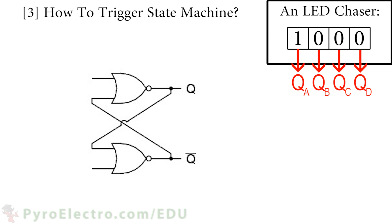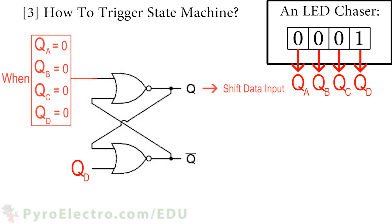To trigger the state machine, we can use the fourth bit of the shift register, QD, to tell the state machine to return to state zero. And we can check if the entire shift register equals zero to know when to set the system to state one.